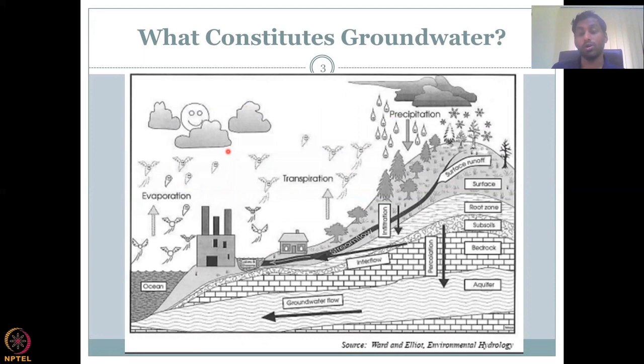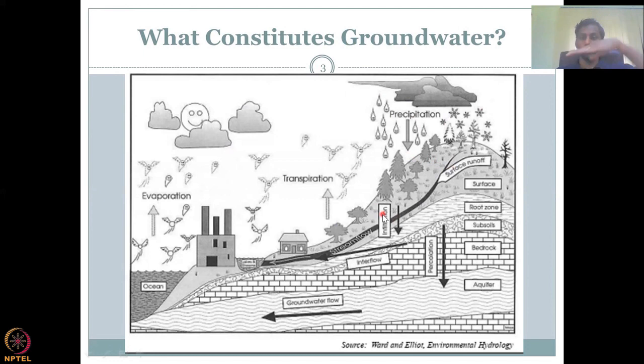Let's look at a pictorial diagram of what constitutes groundwater. You have stars representing snow, and snow can convert into surface runoff — which is easier explained using rainfall. Rainfall can hit the surface and convert into surface runoff. Water hitting the surface goes as surface runoff — pooling, floods — all those are surface runoff discharge due to rainfall.